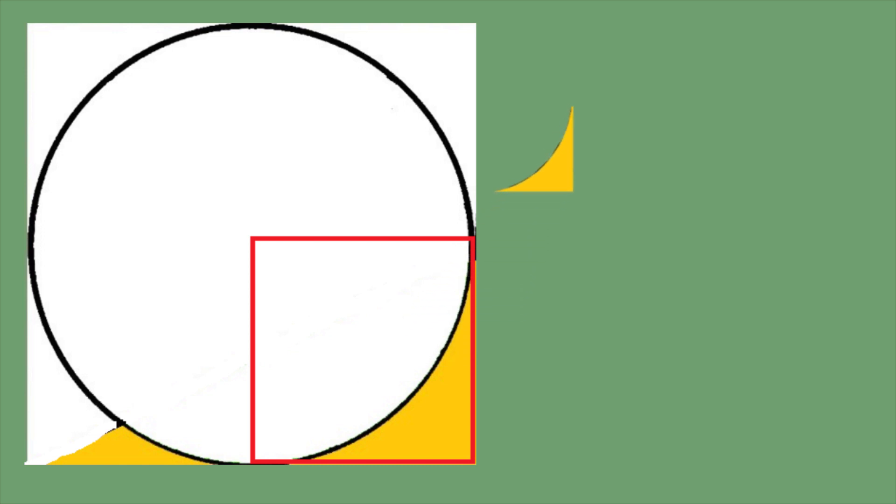So this area equals one quarter of the square minus one quarter of the circle. If we calculate one quarter square, which equals 100 over 4, minus one quarter of the circle, which equals 25 pi over 4.